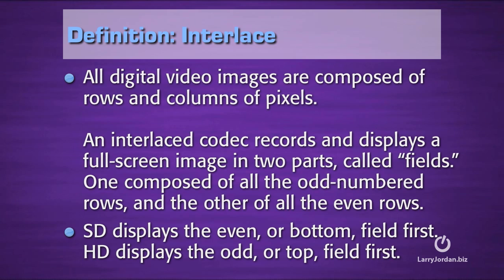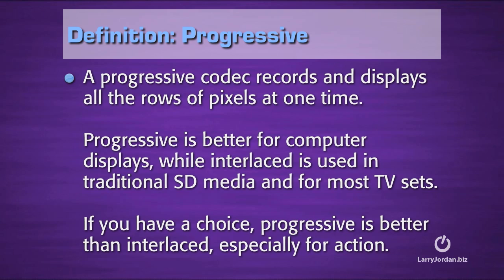All digital video images are composed of rows and columns of pixels. An interlaced codec records and displays a full screen image in two parts called fields. One field is composed of all the odd-numbered rows and the other field is composed of all the even rows, except they're offset by a slight difference in time — a 60th of a second or a 50th of a second. Those two rows, when they are woven together, create an interlaced image. Standard definition displays the even or bottom field first, and high definition generally displays the odd or top field first.